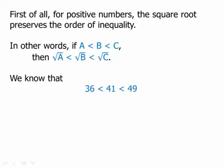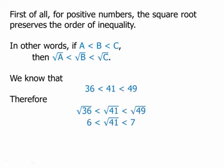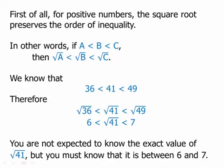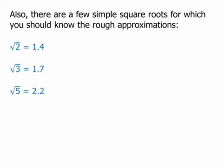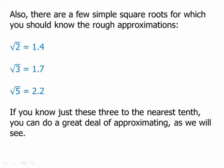For example, 41 is between 36 and 49, so taking the square root of all three tells us that the square root of 41 must be a decimal between 6 and 7 — since the square root of 36 is 6 and the square root of 49 is 7. The test expects you to be able to figure out that kind of approximation. There are also a few simple square roots for which you should know the rough approximations to the nearest tenth — knowing these is very useful for further approximations.